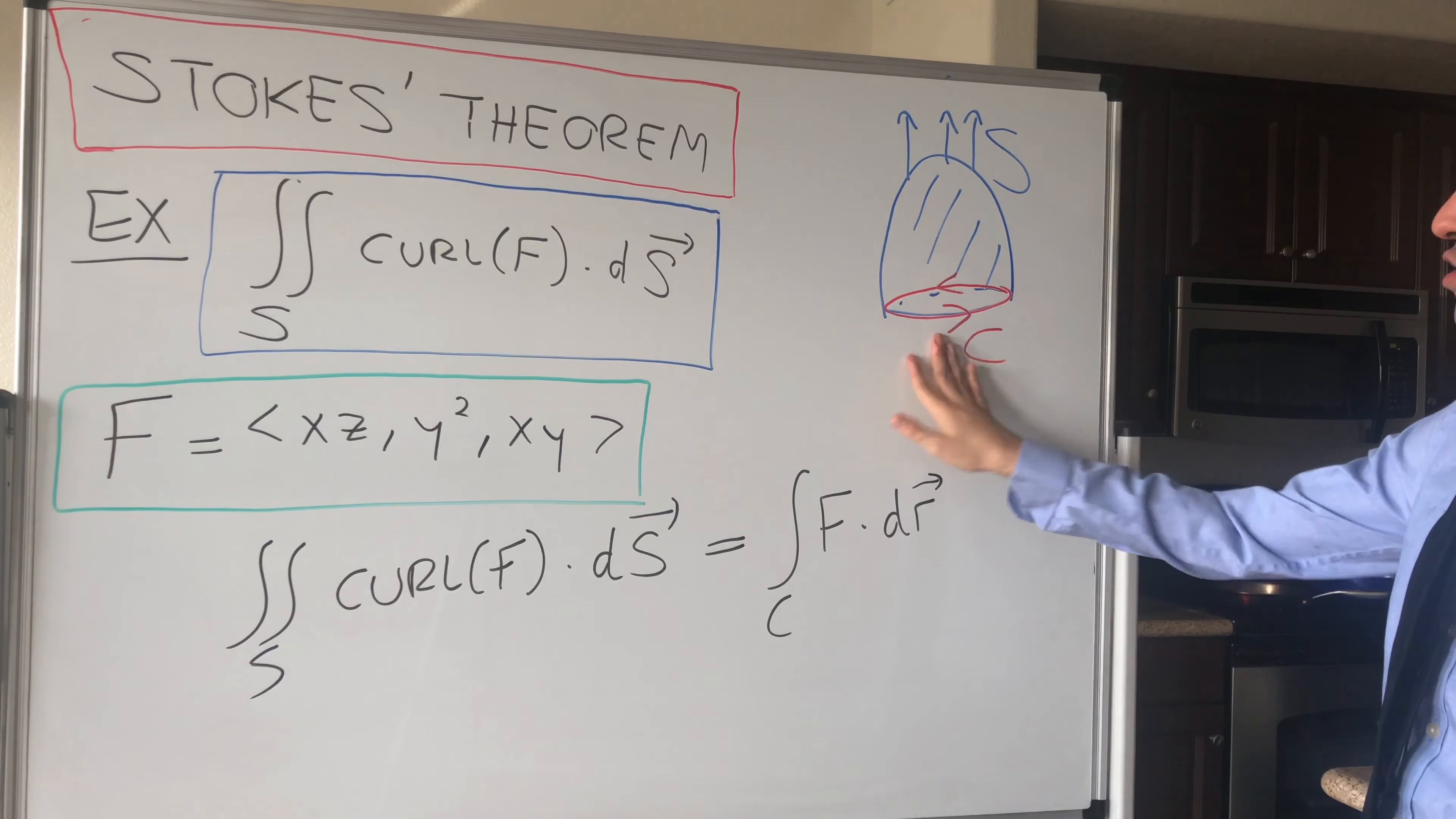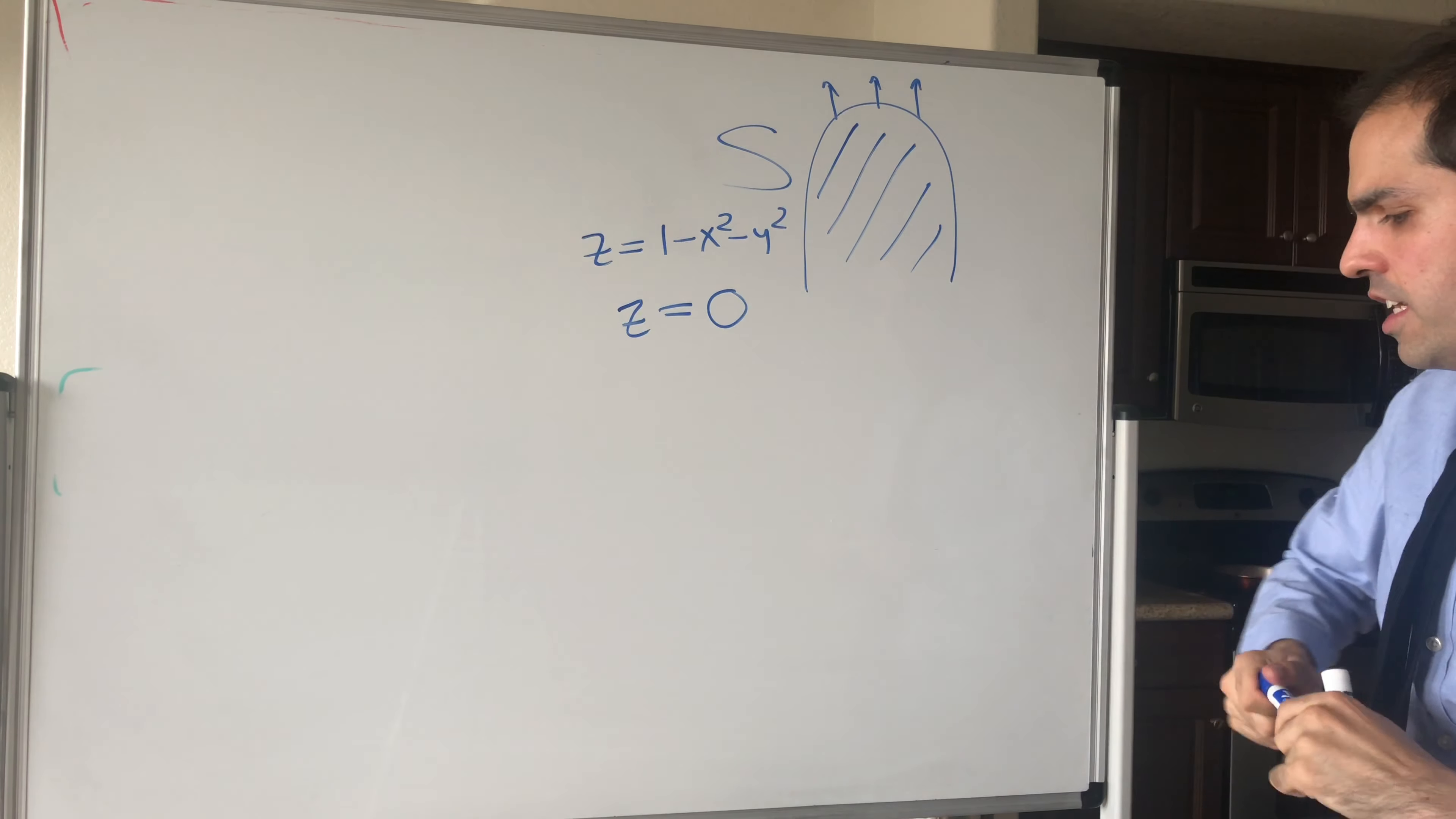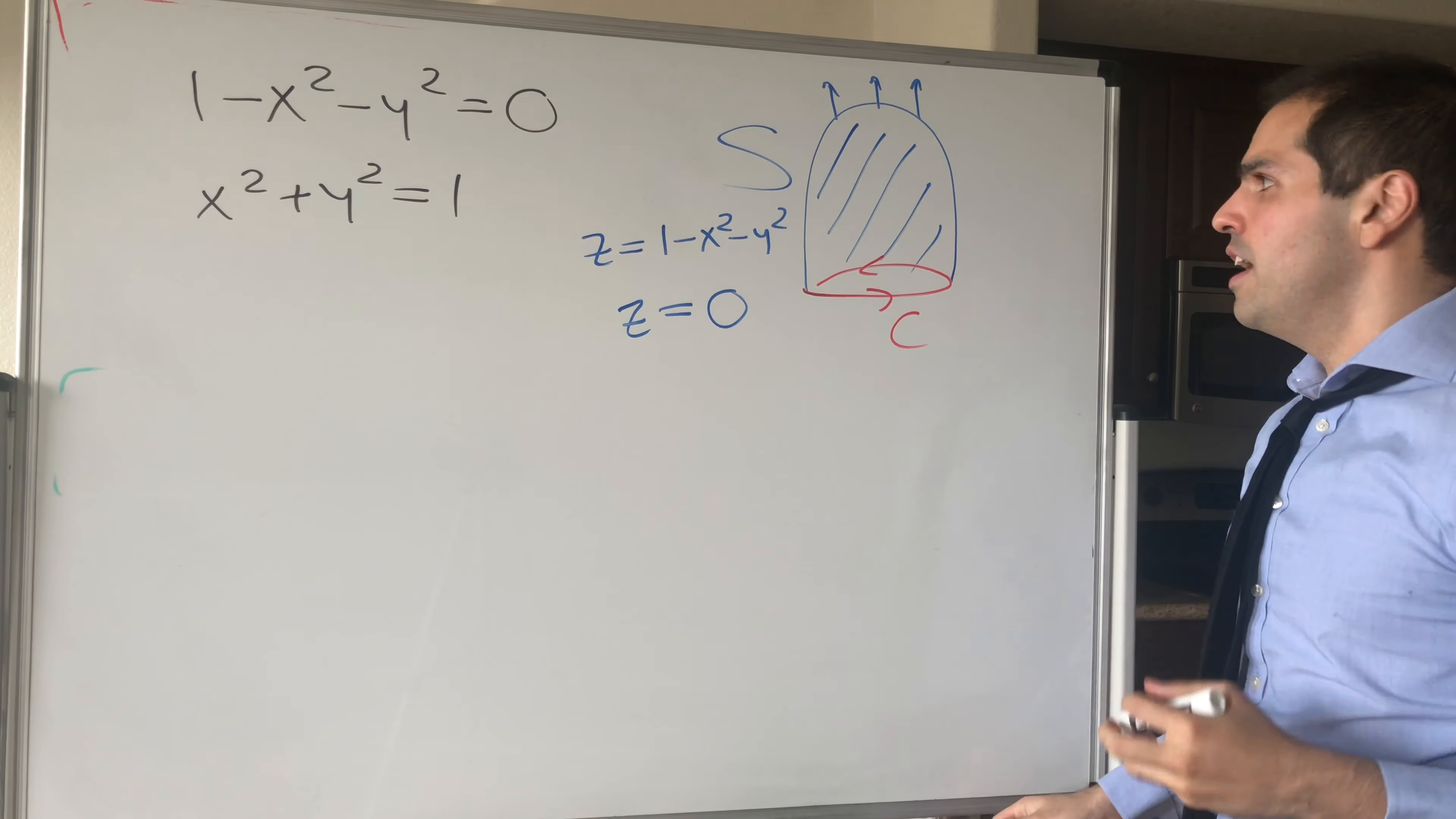Now, as I said, let's first figure out the boundary curve. Well, remember, we said S was the paraboloid z equals 1 minus x squared minus y squared, but above the xy plane, which has equation z equals 0. So, just set 1 minus x squared minus y squared equal to 0, and see what we get. So x squared plus y squared equals 1. So C is actually the unit circle, x squared plus y squared equals 1 in the xy plane.